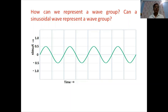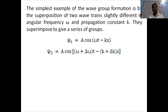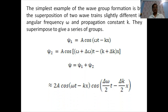Then how can we represent a wave group? The simplest example of wave group formation is by the superposition of two wave trains slightly different in angular frequency omega and propagation constant k. These superimpose to give a series of groups. We have psi_1 = a·cos(ωt − kx) and psi_2 = a·cos((ω + Δω)t − (k + Δk)x). On superposition, psi = psi_1 + psi_2 gives psi = 2a·cos(ωt − kx)·cos((Δω/2)t − (Δk/2)x).